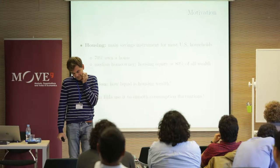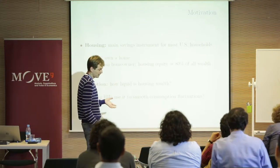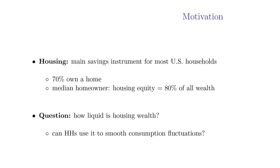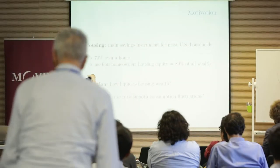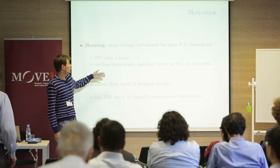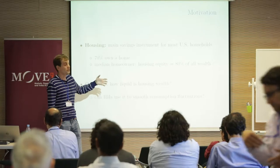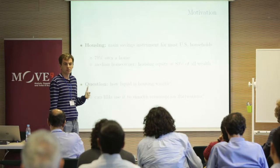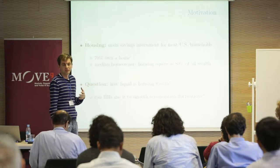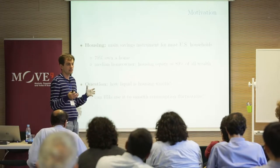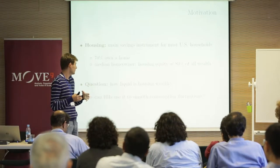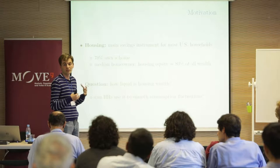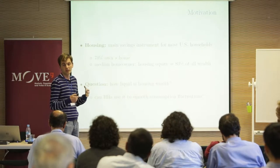The reason we thought about working on housing was motivated by this striking fact. In the U.S., if you look at the wealth portfolios of households, 70% of U.S. households own a home, and the median homeowner has housing equity at a proportion of 80% of his overall wealth. So the question that arose was: how liquid is housing wealth? Can households use it to smooth consumption fluctuations?